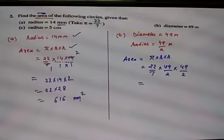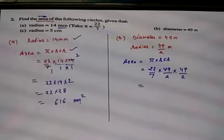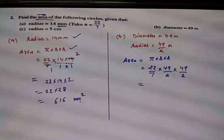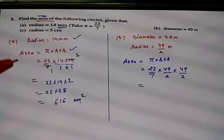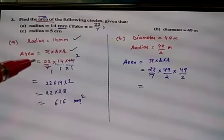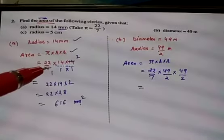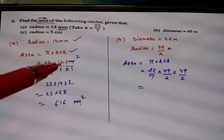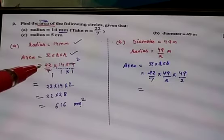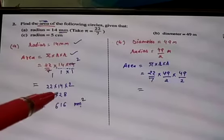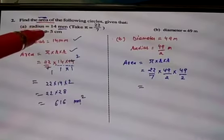The second question: find the area of the following circle given that radius is equal to 14 millimeters, taking pi as 22/7. The formula for area is πr². Radius is 14 mm, so area = 22/7 into 14 into 14. 7 ones are 7, 7 twos are 14 — so 22 into 2 is 44, and 44 into 14 gives 616 millimeters square.